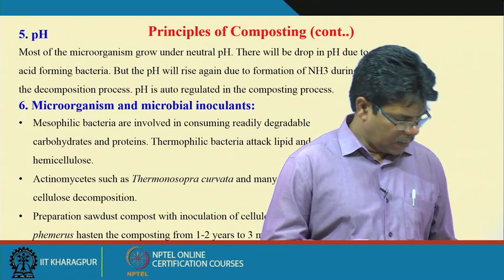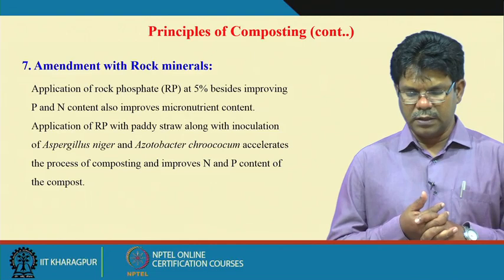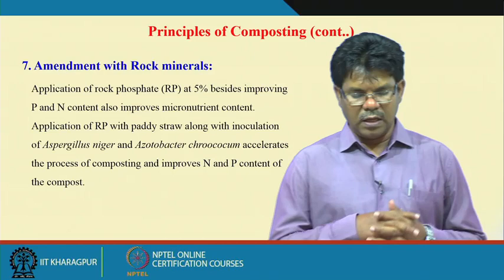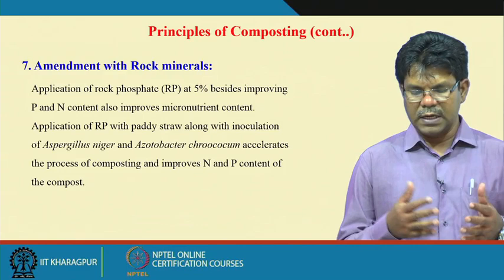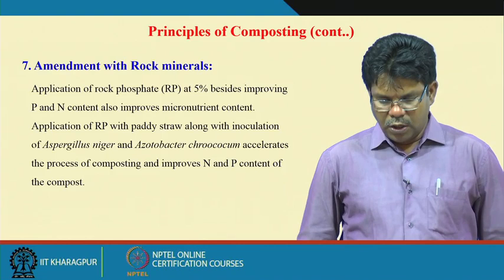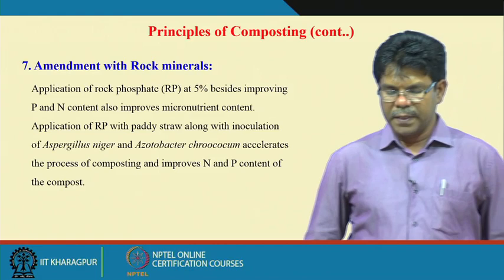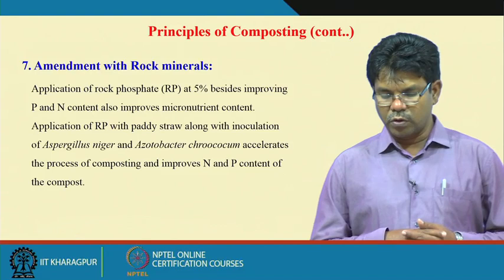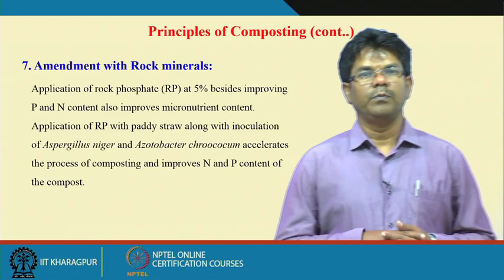Regarding amendment with rock minerals: application of rock phosphate at 5 percent, besides improving the phosphorus and nitrogen content, also improves the micronutrient contents in the vermicompost. Rock minerals can be added during the composting process at different doses, with 5 percent giving one of the better results. Rock phosphate with padistro, along with inoculation of Aspergillus niger and Azotobacter prococum, accelerates the process of composting and improves the nitrogen and phosphorus content of the compost.